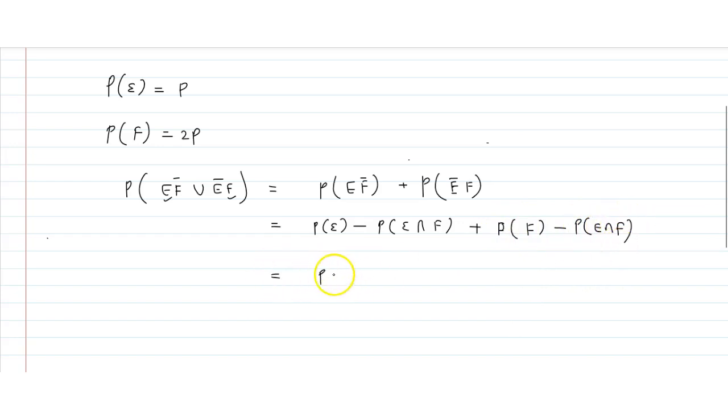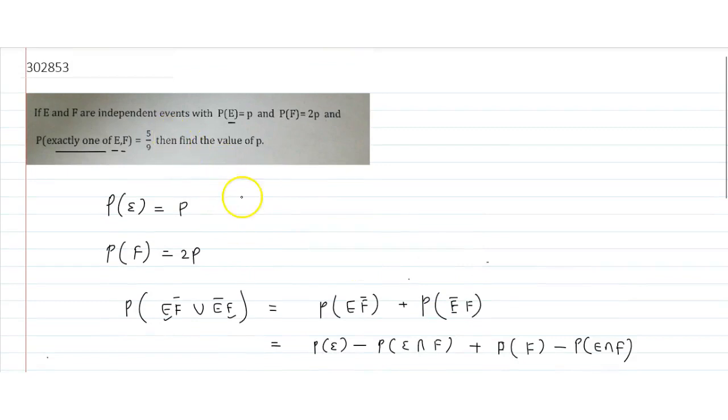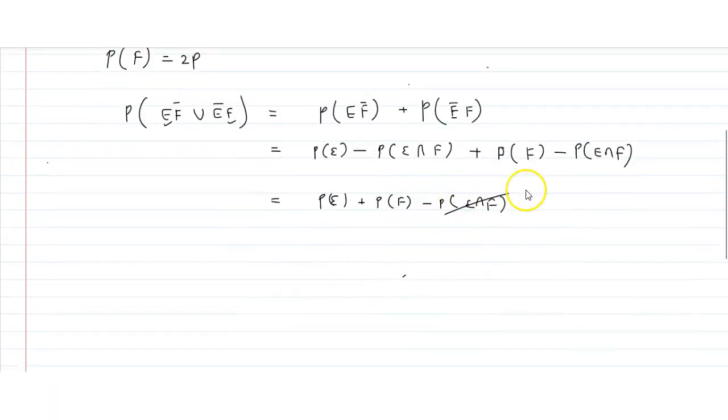So from here, what do we get? P of E plus P of F minus P of E intersection F. These are independent events, so independent events do not combine, so this becomes 0.